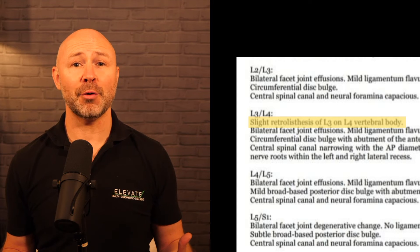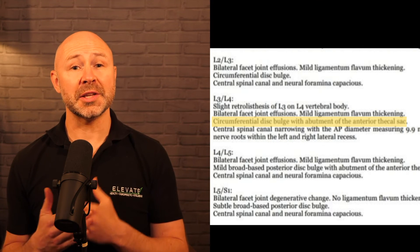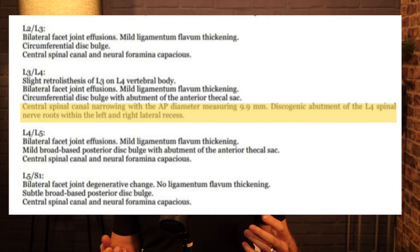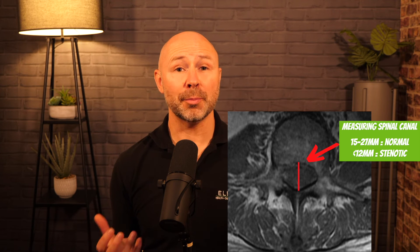At L3-L4 we have the slight retrolisthesis of L3 on L4 as discussed, along with bilateral facet joint effusions, ligamentum flavum thickening, and a circumferential disc bulge with abutment — the disc is pushing against the anterior thecal sac. The clinical significance is uncertain due to the lack of clinical history and absence of physical examination findings. The central spinal canal narrowing measures 9.9 millimeters AP — front to back. Normal is 15 millimeters, though it can be up to double that in some people. Anything less than 10 millimeters is considered stenotic and could well be the primary source of that person's symptoms.